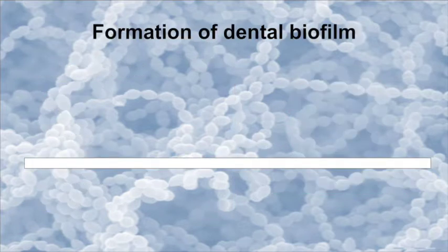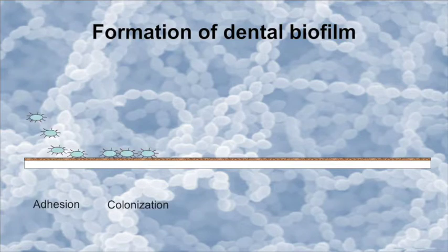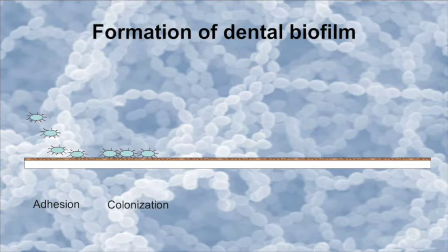Formation of the dental biofilm starts immediately after cleaning of the tooth. An organic film of proteins known as the dental pellicle will adsorb to the exposed dental hard tissues. The molecules in this organic film may aid in adhesion of bacteria. The first bacteria to adhere will adhere to the pellicle; however, later colonizers may bind to already adhered bacteria. Coaggregation — that is, adhesion of genetically distinct bacteria to each other — has been described to play a pivotal role in dental biofilm formation, and is a widespread phenomenon among oral bacteria.